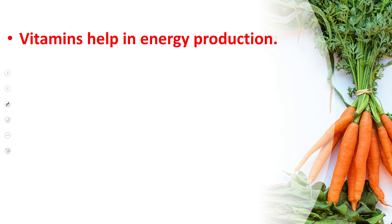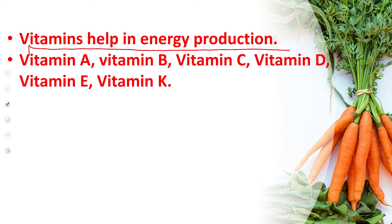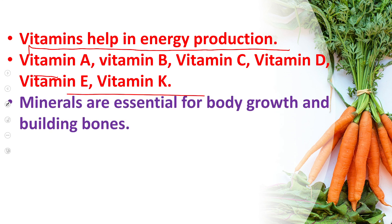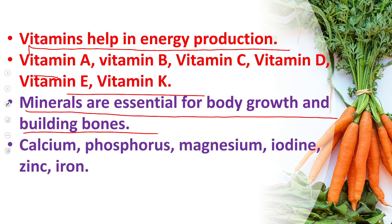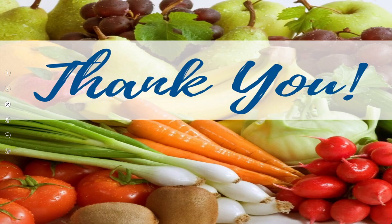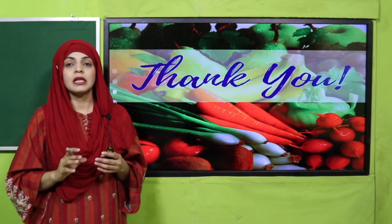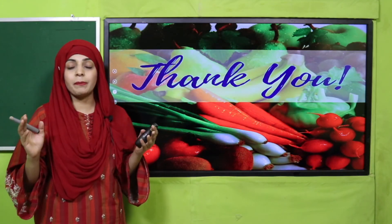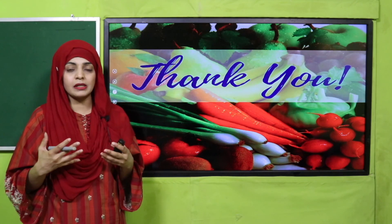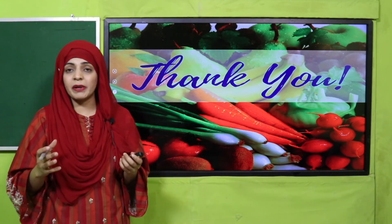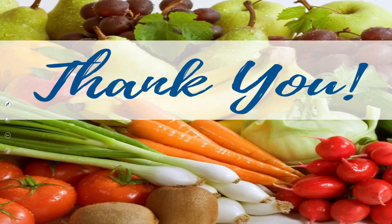Now is the time for wrap-up. Today we learned: vitamins help in energy production; Vitamin A, B, C, D, E, and K are the important vitamins; minerals are essential for body growth and building bones; calcium, phosphorus, magnesium, iodine, zinc, and iron are some important minerals. I hope you have learned about all the important food groups needed for a balanced diet. Keep everybody around you safe, have a good day, thank you so much.